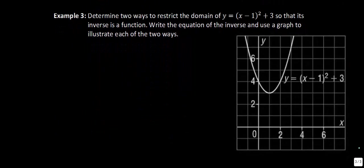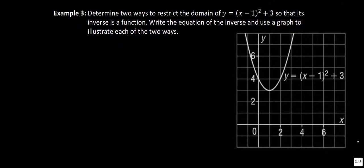Example 3 says: determine two ways to restrict the domain of y equals (x minus 1) squared plus 3 so that its inverse is a function. As we saw in the last example, the inverse was not a function. What we're going to try to do is restrict the domain on the original function so that the inverse is a function. It also says to write the equation of the inverse and use a graph to illustrate each of the two ways.